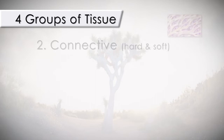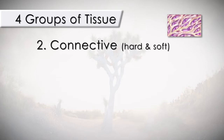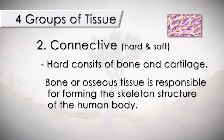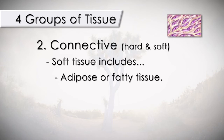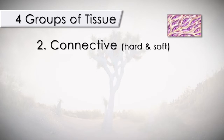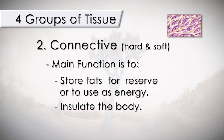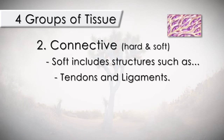There are two types of connective tissue: hard and soft. Hard consists of bone and cartilage. The bone, or osseous tissue, is responsible for forming the skeleton structure of the human body. Cartilage is a tough elastic structure that is found between the bones and in the nose, ears, and the larynx. Soft connective tissue includes adipose, or fatty tissue, whose function is to store fats for reserve or to use as energy, and it insulates the body. Soft connective tissues also include structures such as tendons and ligaments, whose main function is to help hold major body structures together, such as holding the skeletal and the skeletal muscle systems together.